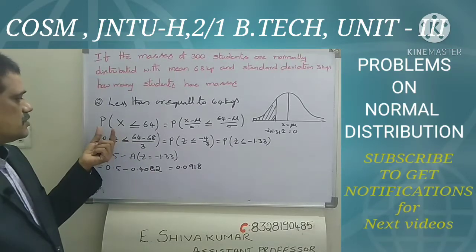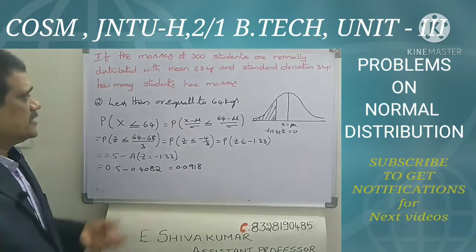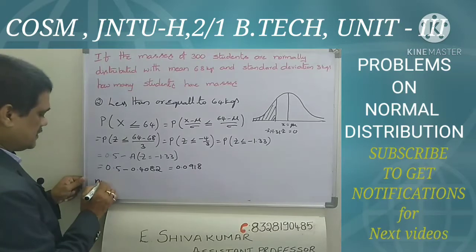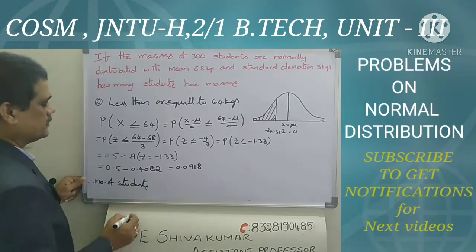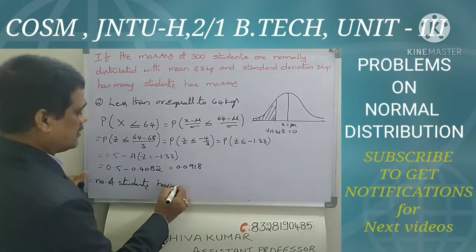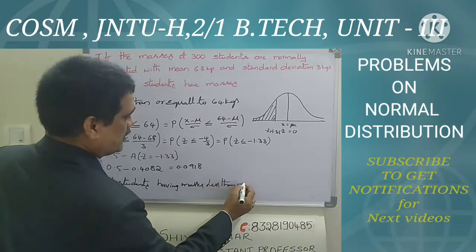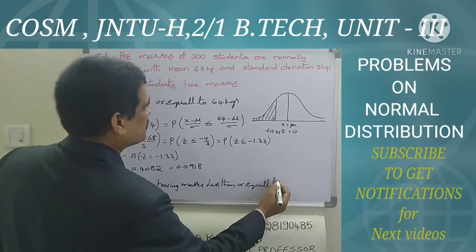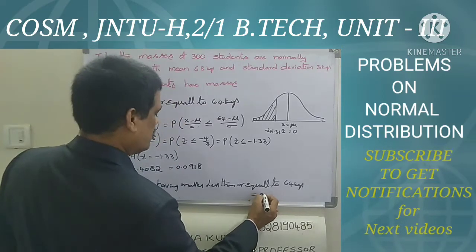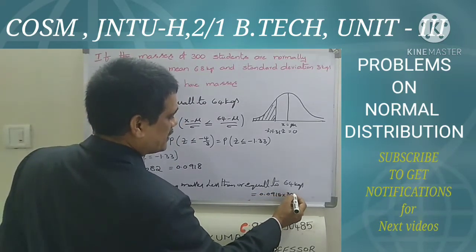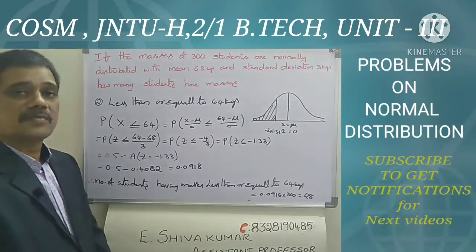This is the probability of students with masses less than or equal to 64 kg. The number of students having masses less than or equal to 64 kg equals 0.0918 into 300, which gives 28. So this is the answer for the second problem.